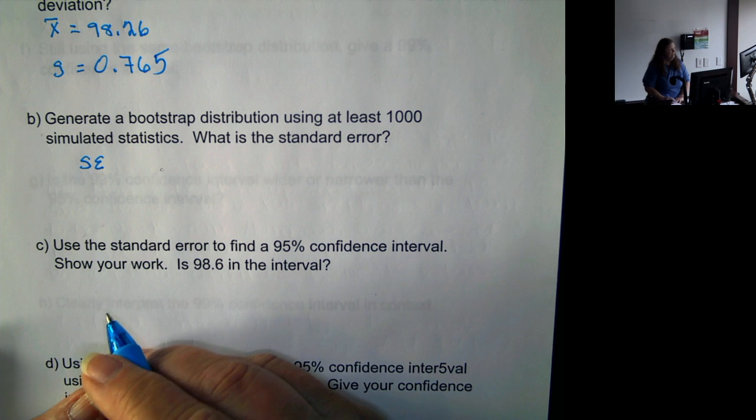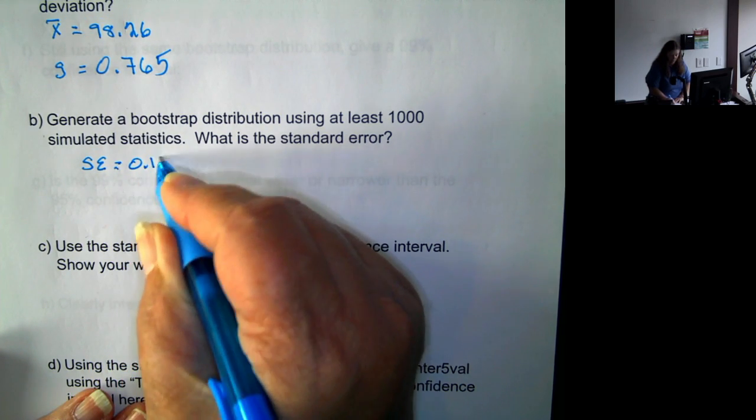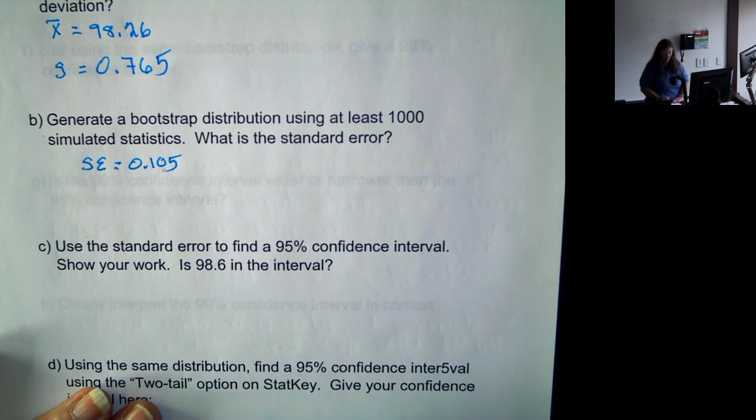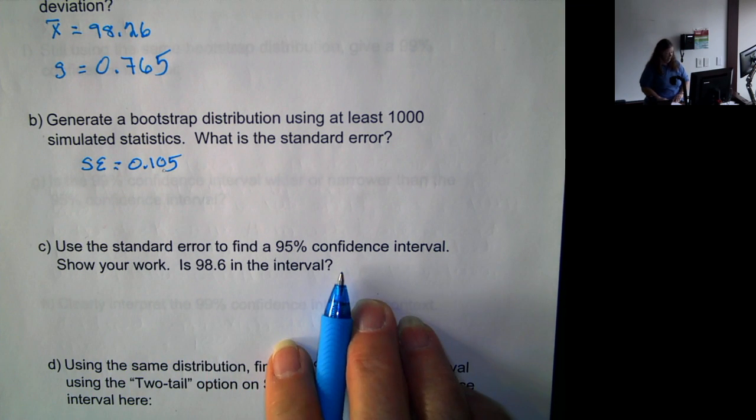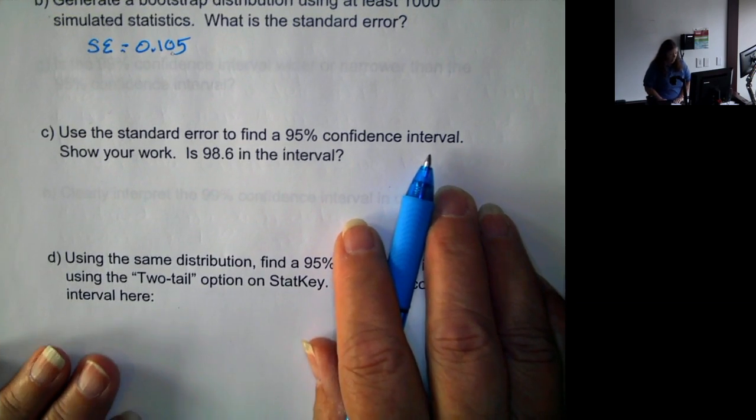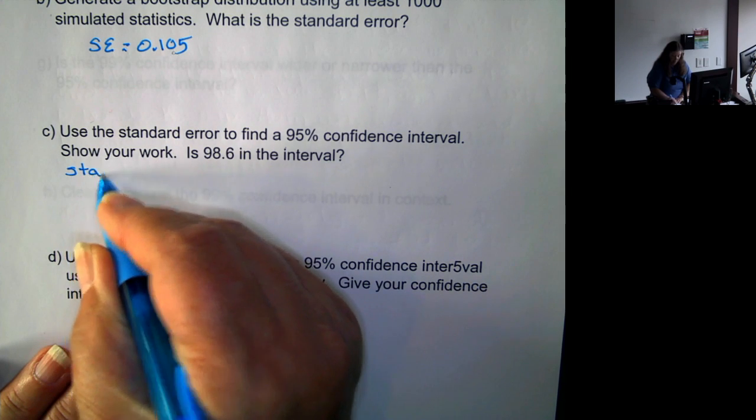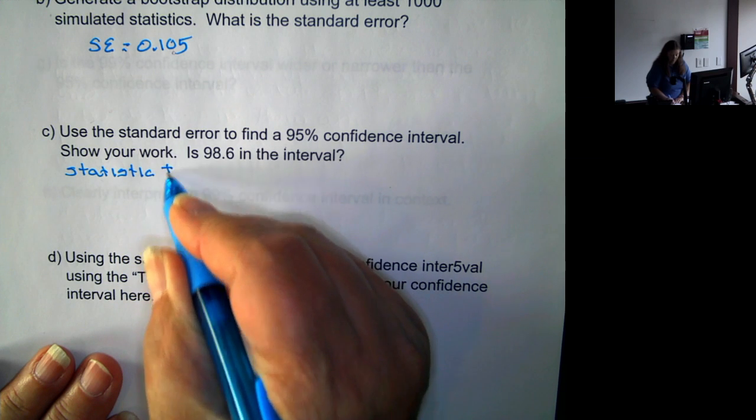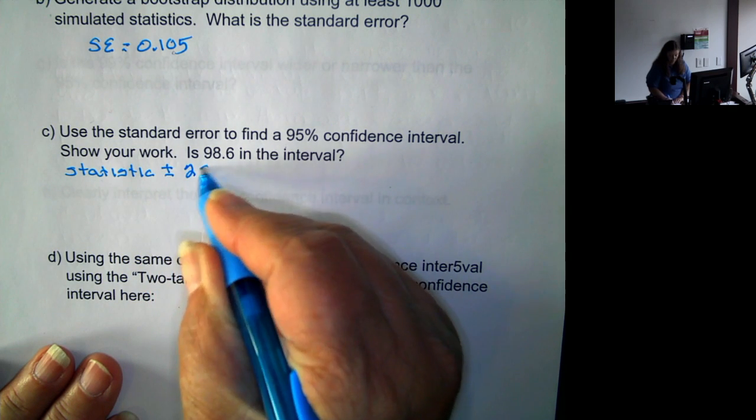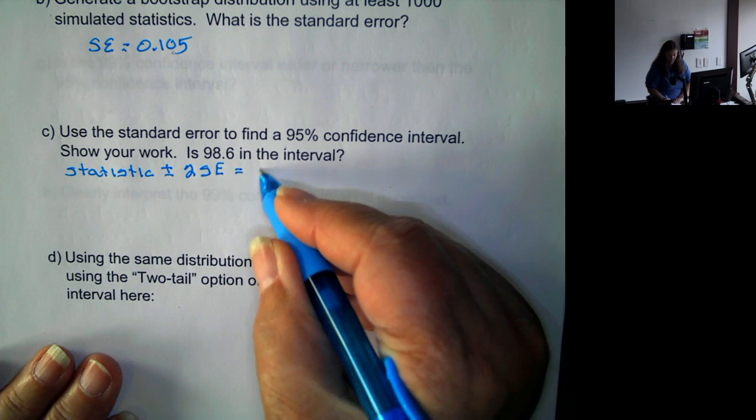Standard error is 0.105. So we want to use the standard error to find a 95% confidence interval. Well, it's the statistic plus or minus 2 times the standard error.